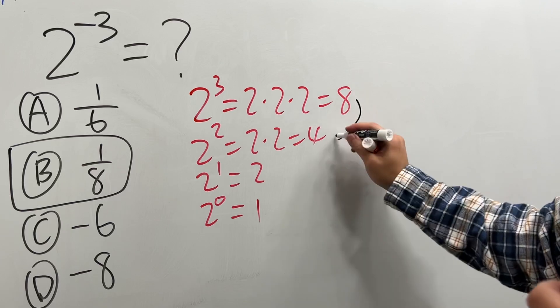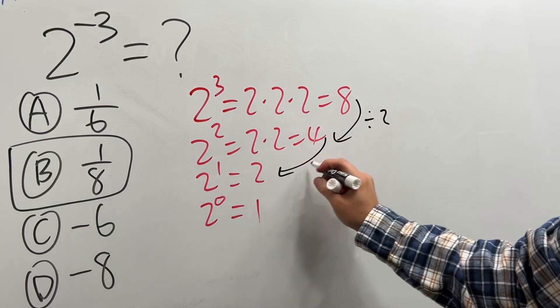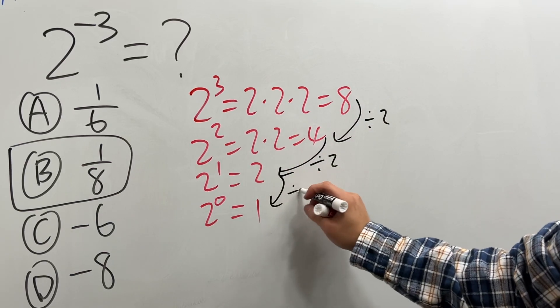Why? Because look, from here to here, you divide it by 2. From here to here, you divide it by 2. So you have to follow the same pattern, you divide it by 2.